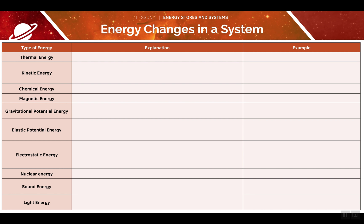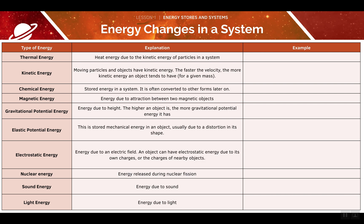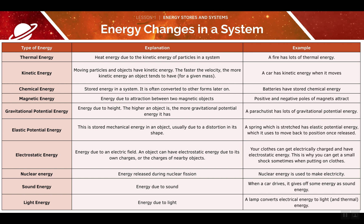Since we've identified the types of energy stores, let's see if we can explain each one. For example, we could simply say that nuclear energy is released during nuclear fission. Pause the video now and have a go at filling in the rest of this column. Now let's see if we can name any examples — sticking with nuclear energy, we could say that it's the energy used to make electricity. Try to fill in the rest of the column now. Once the whole table is filled, feel free to pause and recap the knowledge we've just learnt. This is a good summary you can use for your revision.